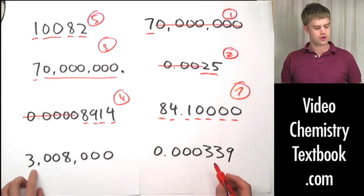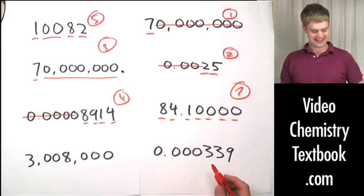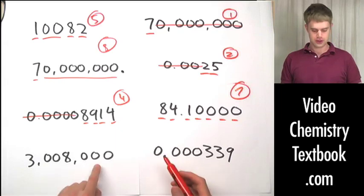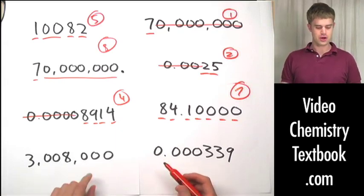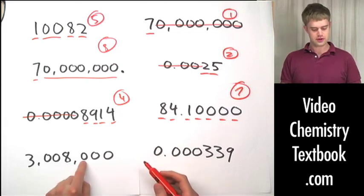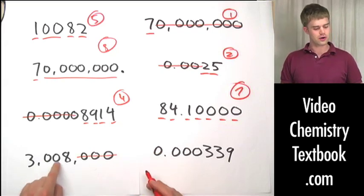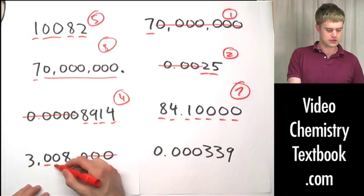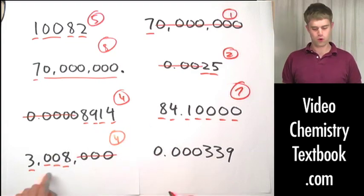Let's look at 3,008,000. Zeros to the right of the digit — are these significant? No, they're not, because there's no decimal point. But there are zeros that are sandwiched between non-zero digits, so those are significant. Four total significant figures here.